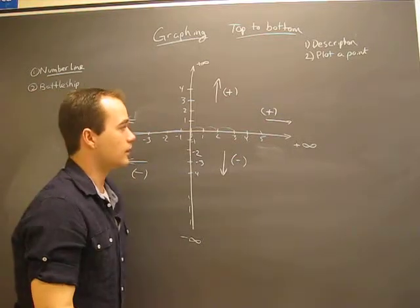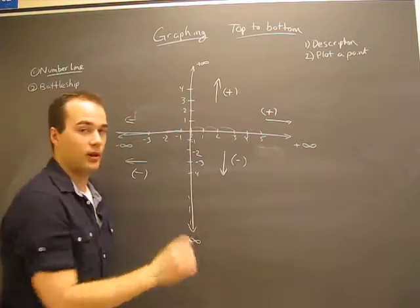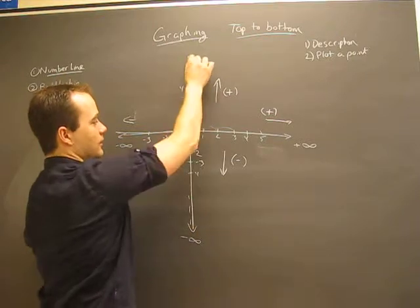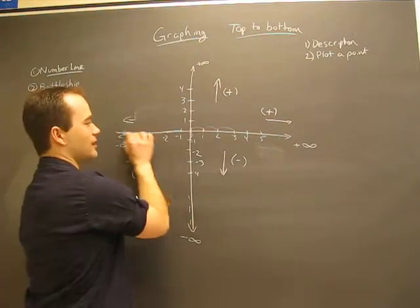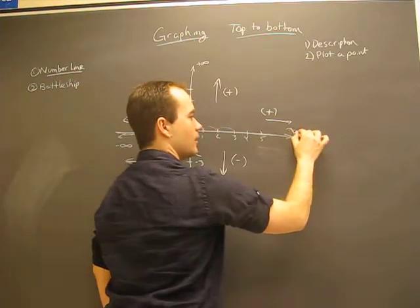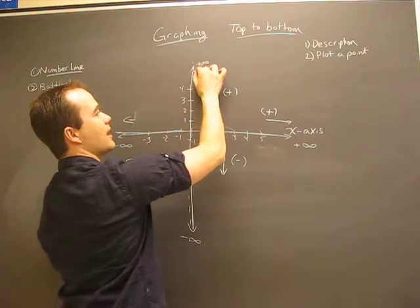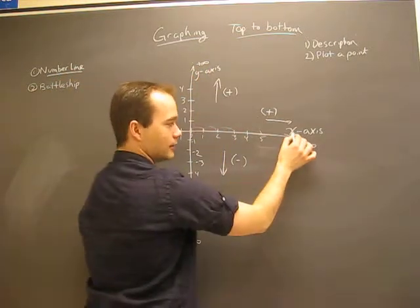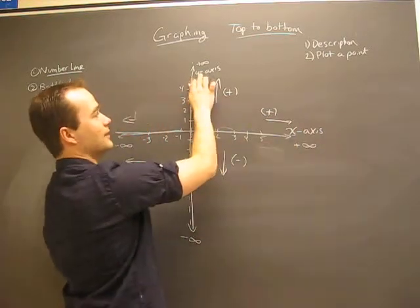Now just to describe the graph: these aren't just random lines, they have special names. They call them axes. So this line is called the x-axis, and this line up and down is called the y-axis. You can write that in your book: x-axis, y-axis.